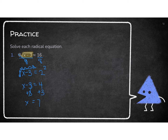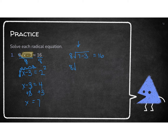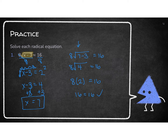Based on the information from last time, I can't square a negative number because that would be no solution. I know this is a good answer, but let's double check. I plug in 7 minus 3 and see if that equals 16. We're just solving the left-hand side: 7 minus 3 is 4, the square root of 4 is 2, and 8 times 2 is 16. So this is a good answer, and I'm done with the problem.